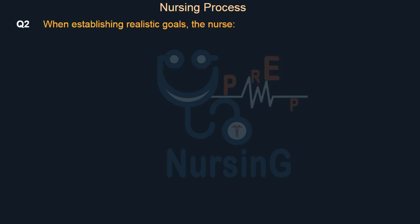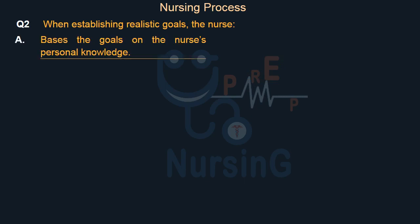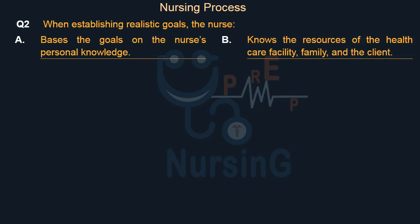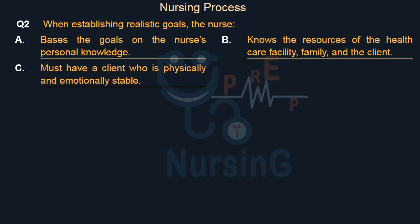When establishing realistic goals, the nurse — Option A: Bases the goals on the nurse's personal knowledge. Option B: Knows the resources of the health care facility, family, and the client. Option C: Must have a client who is physically and emotionally stable. Option D: Must have the client's cooperation.